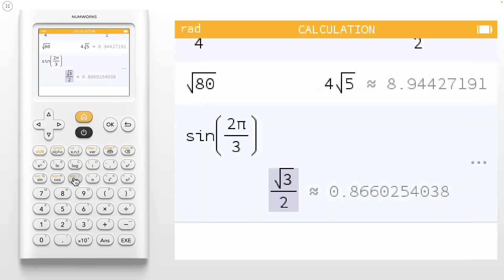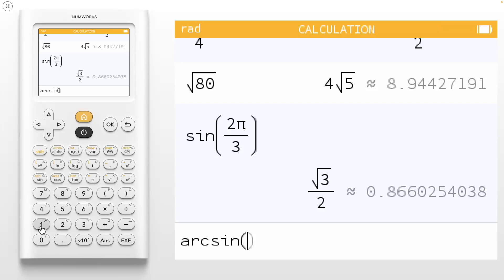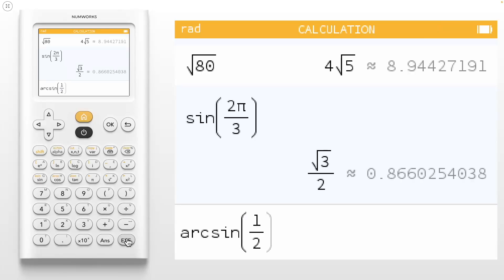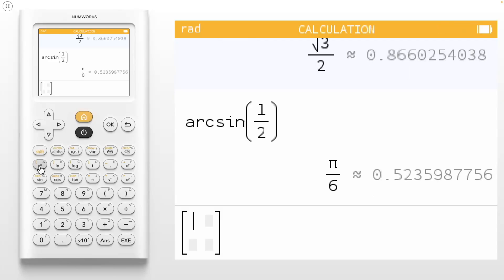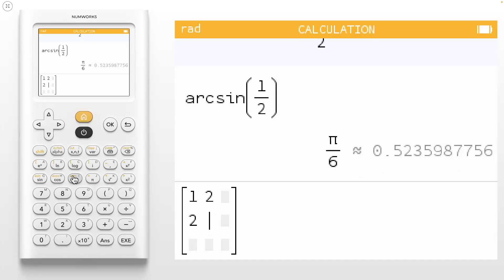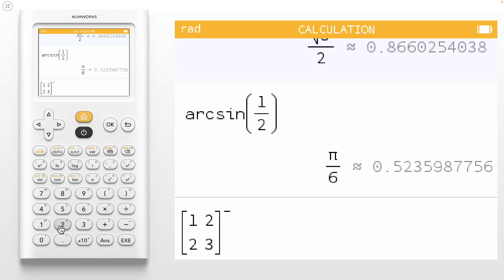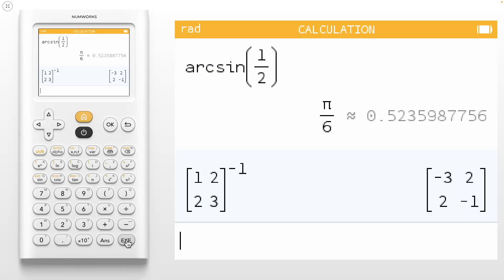Using your shift key will provide you access to even more operations. You may notice that we have the computer science abbreviations for arc sine, arc cosine, and arc tangent. For example, using shift and then the sine button allows you to take the inverse sine of a number. Let's compute arc sine of 1 divided by 2. Using shift and the e to the x button allows you to quickly create vectors and matrices. The matrix 1, 2, 2, 3 can be raised to the negative 1 power to find the inverse.